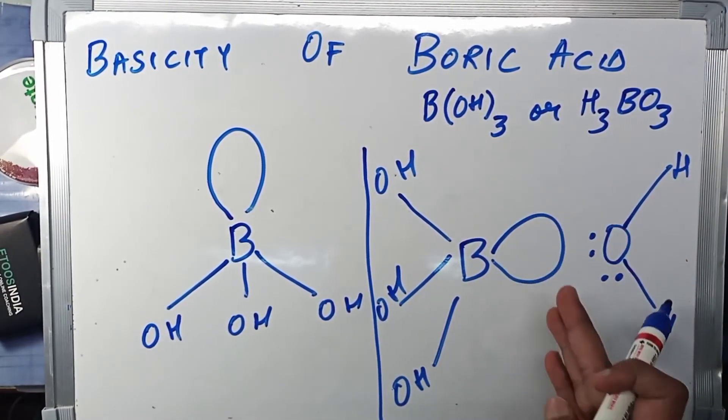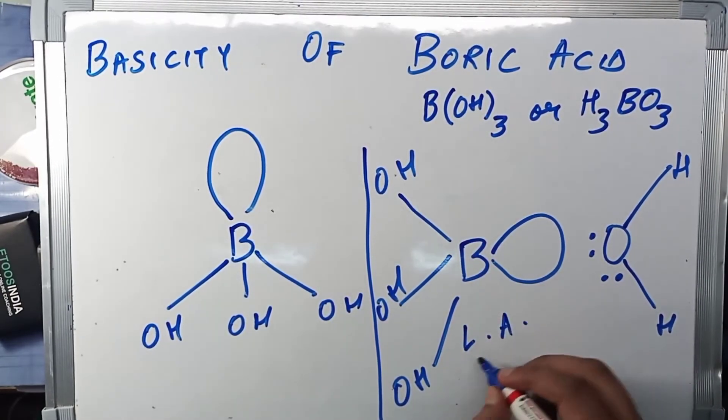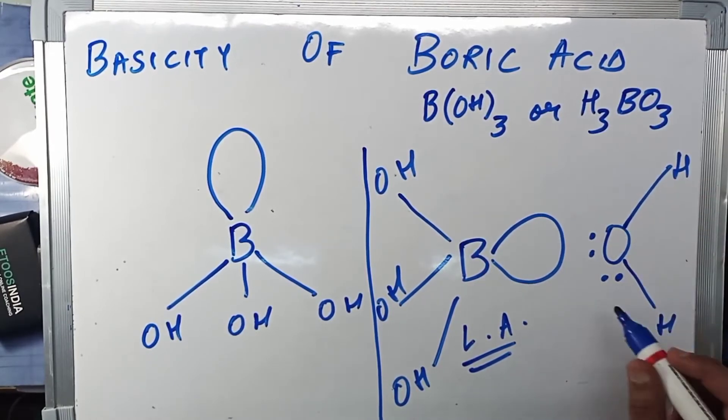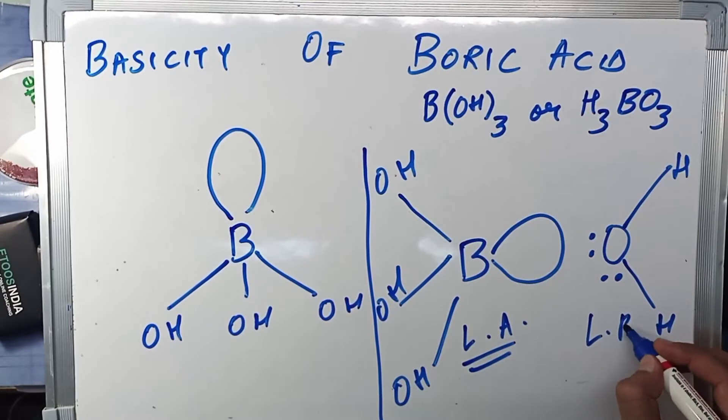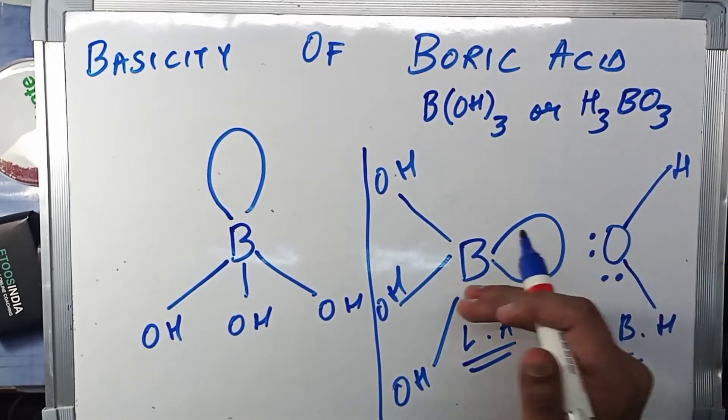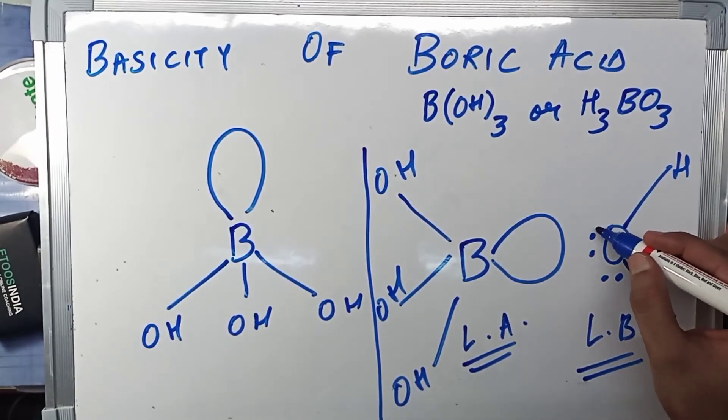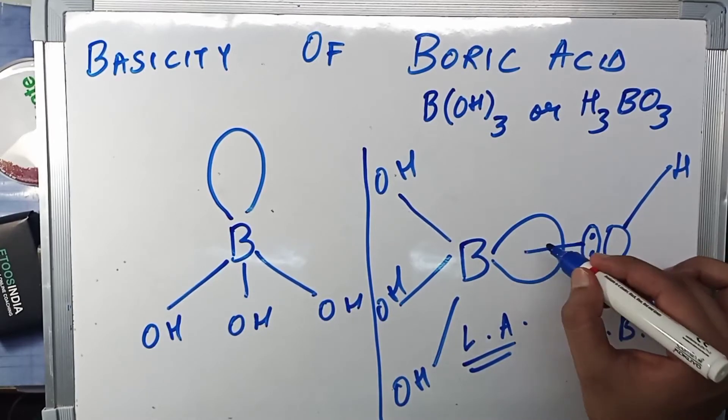Boric acid, having a vacant orbital, acts as a Lewis acid. And H₂O, having extra lone pairs, acts as a Lewis base. So you guys might be familiar with the interaction of a Lewis acid and a Lewis base—they form a coordinate bond.